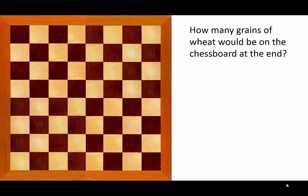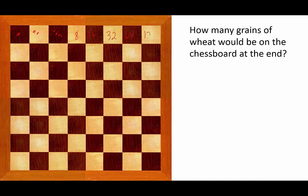Let us look at this more carefully. He wanted one grain placed here, two grains here, four here, and so on. So let's write 8, 16, 32, and so on — 64, 128 — until at the very end. You would have noticed that this is just 2 to the power of 0, 2, 2², 2³, and so on. This one would be 2 to the power of 63.